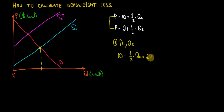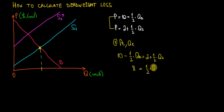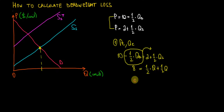Now I'll take the numbers on one side: 10 minus 2 equals 8. I want to take the quantities on the right side, so I have 1/2 Q from the supply side, plus 1/2 Q moved from the left side. As a result, 8 equals 1Q, so that is 8 equals QE — the quantity equilibrium. Now I already have one piece of the relevant information I was looking for.